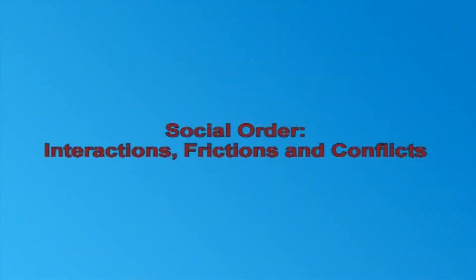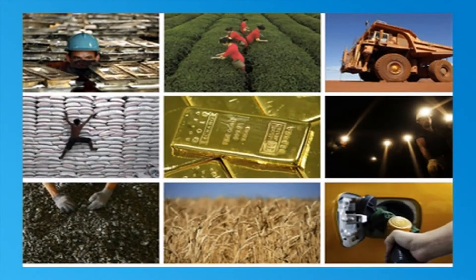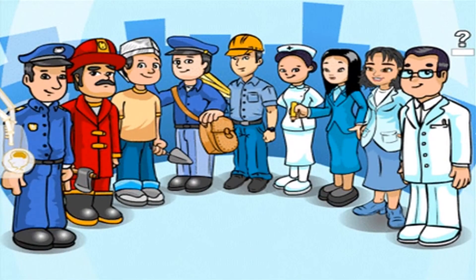The nature of these components of a society may vary from one society to another and also within the same society. However, these components exist in a society in some form or other. Social order refers to the interactions of these social components. For example, family-to-family interactions, caste and community interactions, interactions between rural and urban societies, interactions among economic divisions, interactions between different religions, etc. Moreover, social order also means how the various economic activities are carried on in a society, how marriages are conducted, how people are occupied in different jobs, farms or professions, and so on.